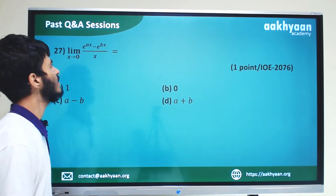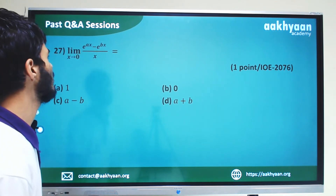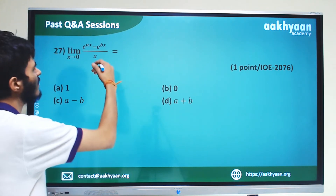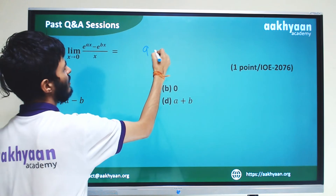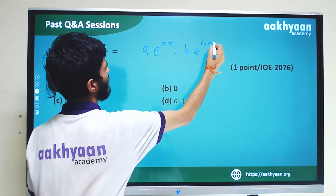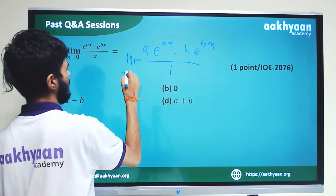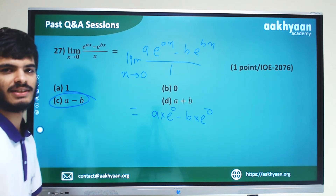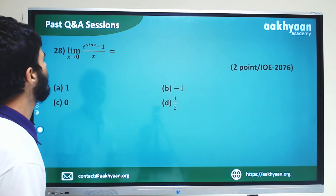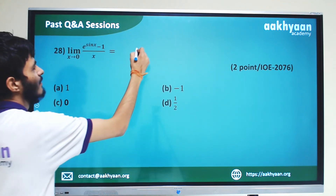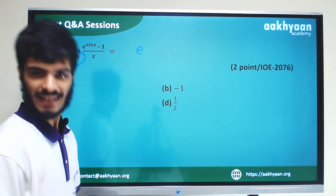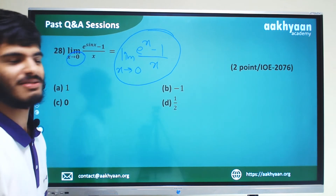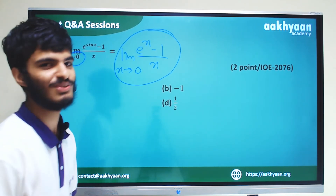In the next problem, we have e to the power bx minus e to the power negative bx by x. This will solve to give a value. We take the limit x tends to 0 and use the available method. In the 28th number problem, we are given e to the power sin x minus 1 by x. Once sin x tends to zero as x tends to zero, we get x minus 1 by x, limit x tends to zero equals 1.